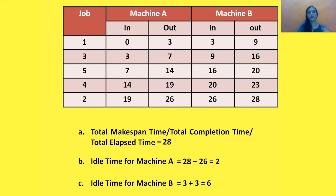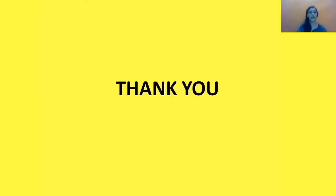This way we have calculated the total elapsed time, idle time on Machine A, and idle time on Machine B after getting the optimal sequence with Johnson's Rule for the n jobs two machine case. Thank you for watching — I hope this video helps you understand sequencing of jobs. Please subscribe, like, share, and comment. Happy learning!